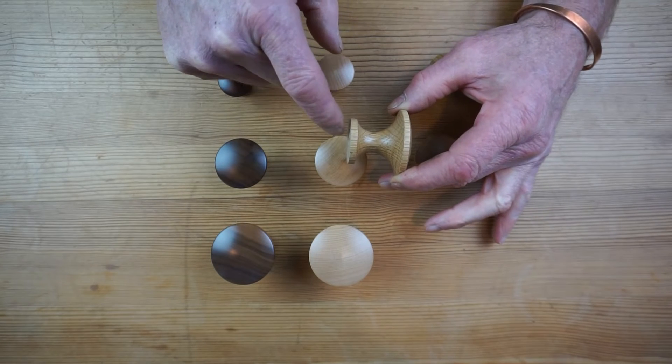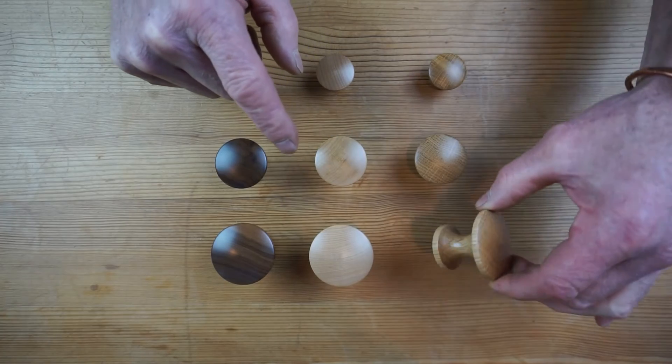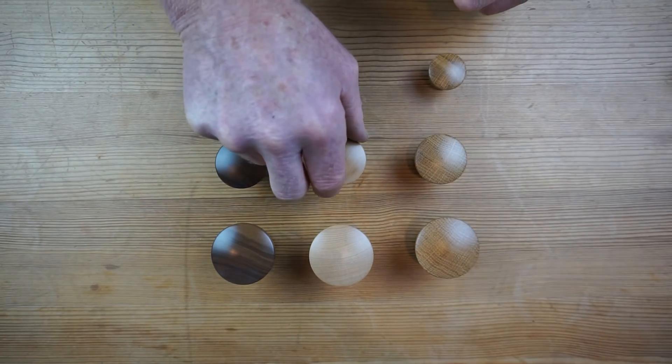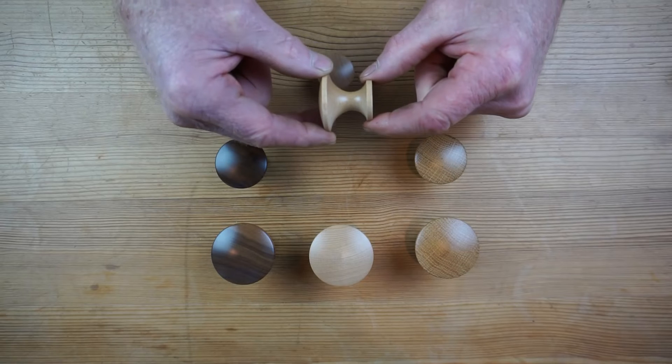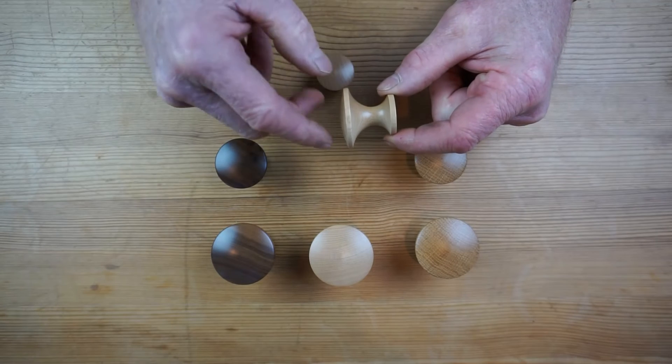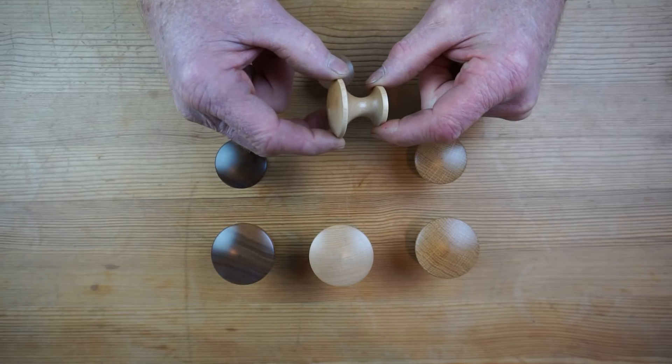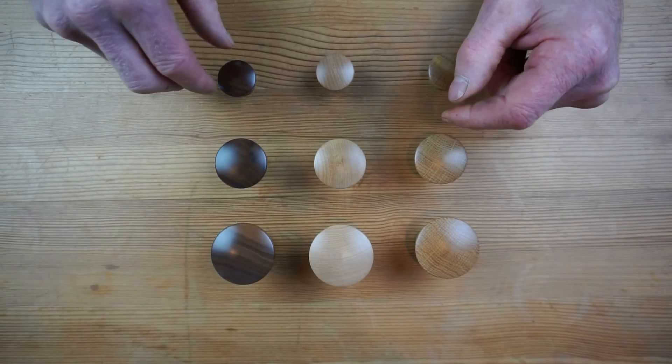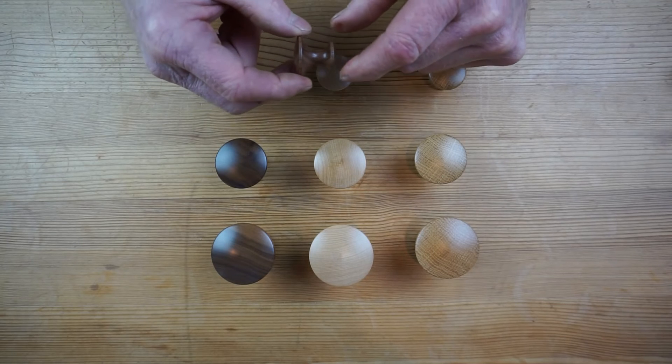That's the oak 48 mil. This is the maple 40 mil, just showing you the design. Beautifully designed, a very nice looking knob, very modern. And this is the 30 mil knob.